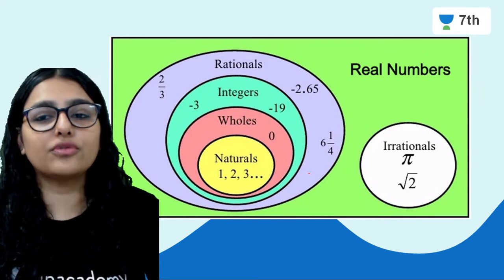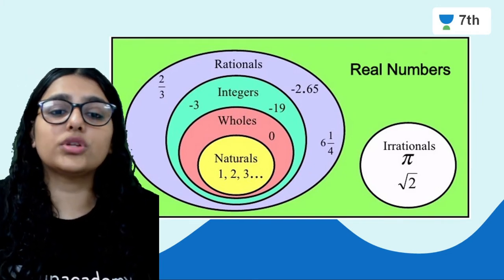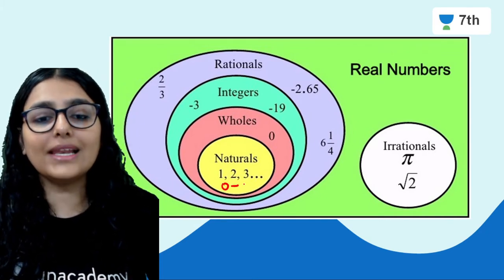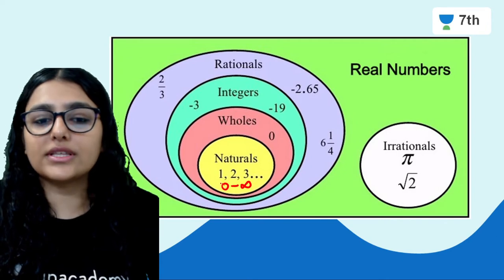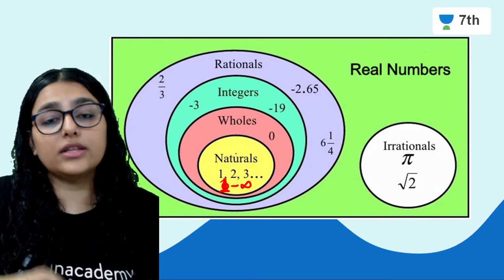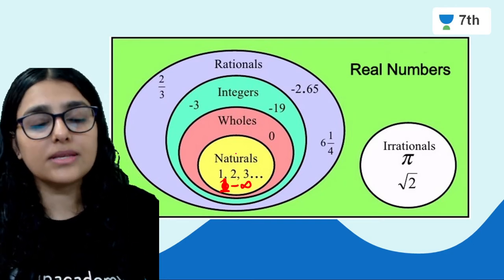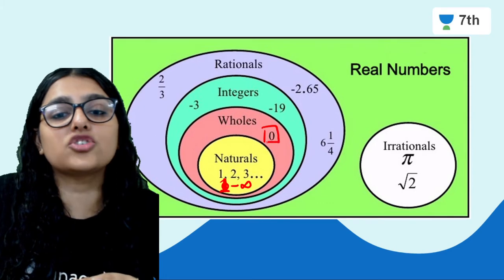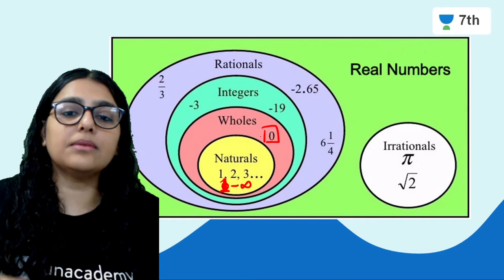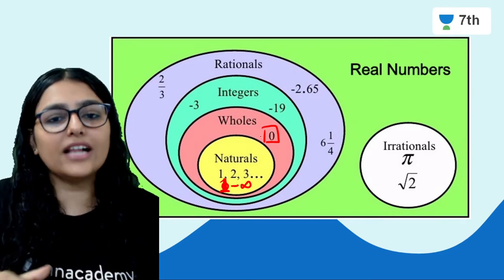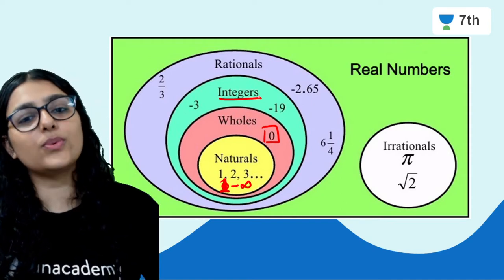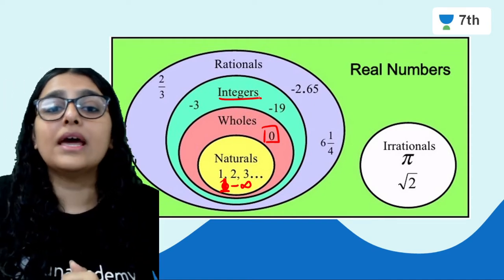Rational numbers are a part of the real number system. We all know what natural numbers are — they start with 1 and go up till infinity. After that, the bigger circle contains whole numbers, because there is an extra number, 0, which is very important. Then natural numbers and whole numbers are engulfed by integers. Basically, integers are positive as well as negative whole numbers.